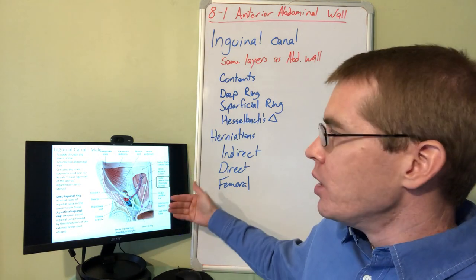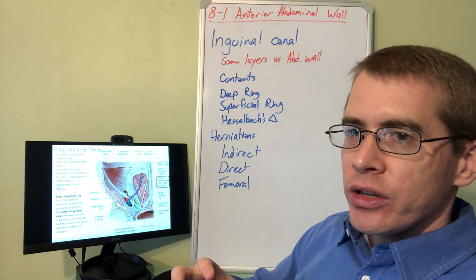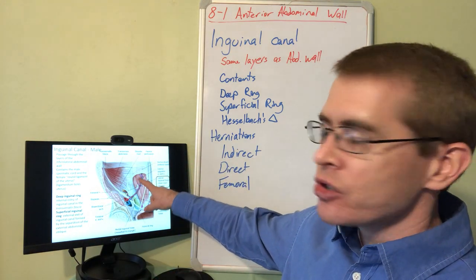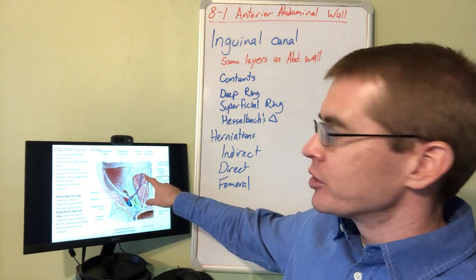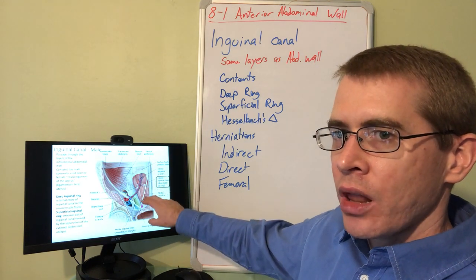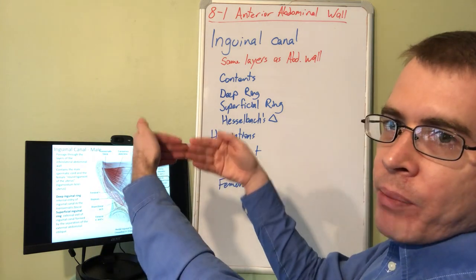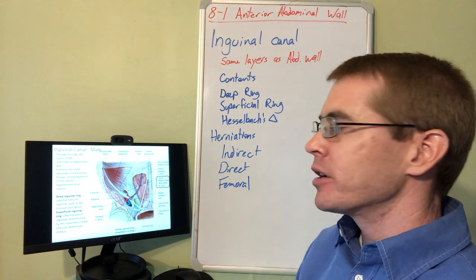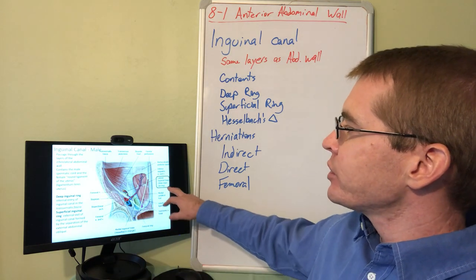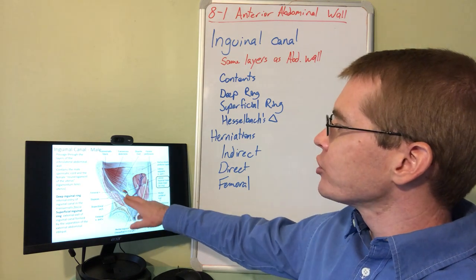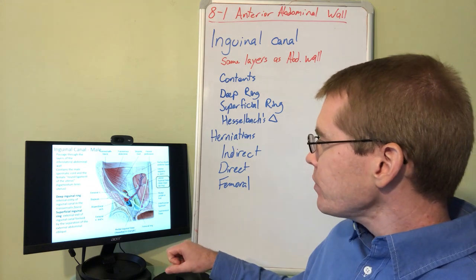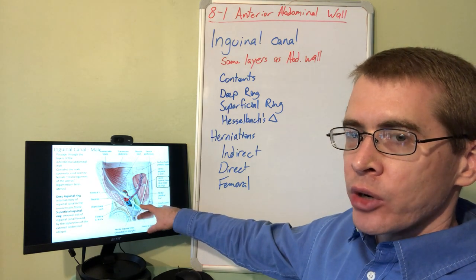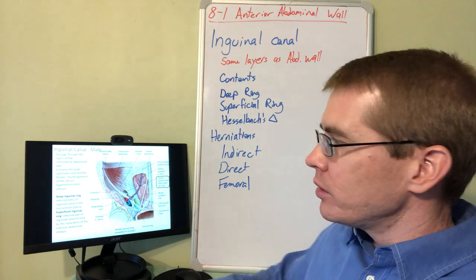Here we have an internal view of Hesselbach's triangle and the deep inguinal ring. We're looking at the anterior abdominal wall below the arcuate line, with the visceral organs and spinal column removed so we can see the inside of the anterior abdominal wall. The emphasis is on the deep inguinal ring and the structures passing through it. We can also see Hesselbach's triangle just medial to the deep inguinal ring, which makes sense because it lies behind the superficial inguinal ring, which is more medial and anterior.